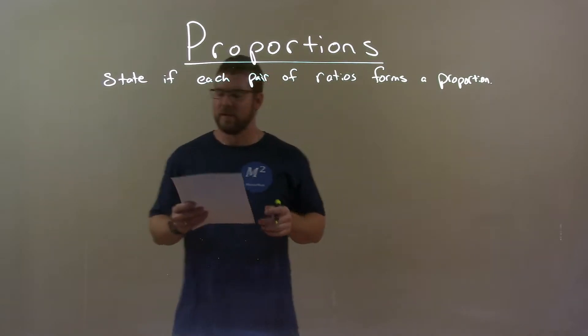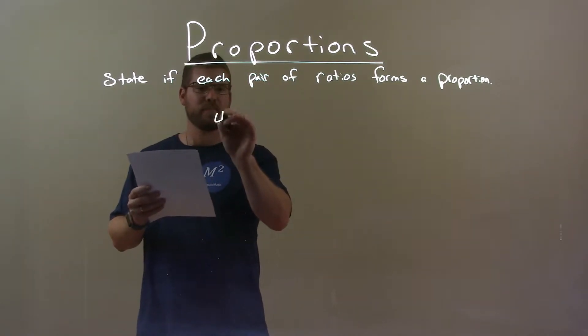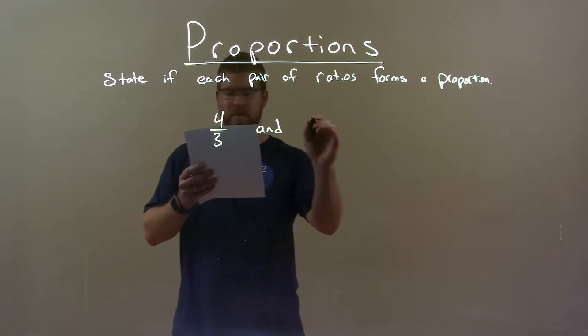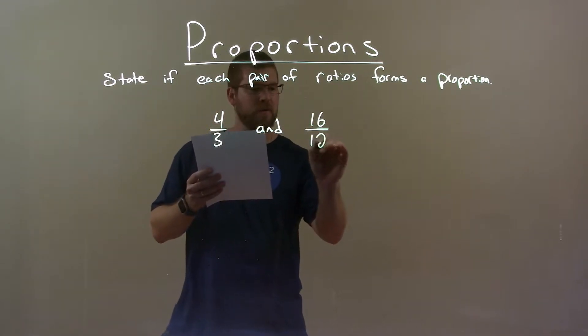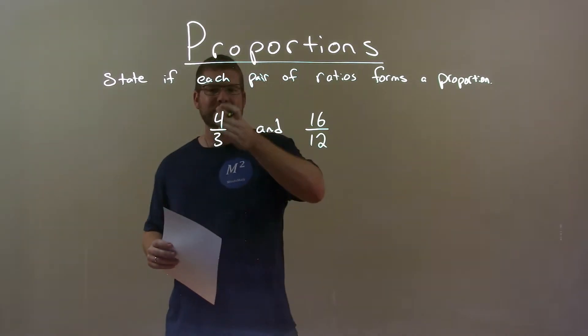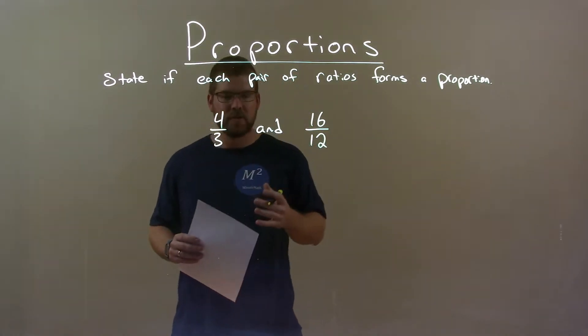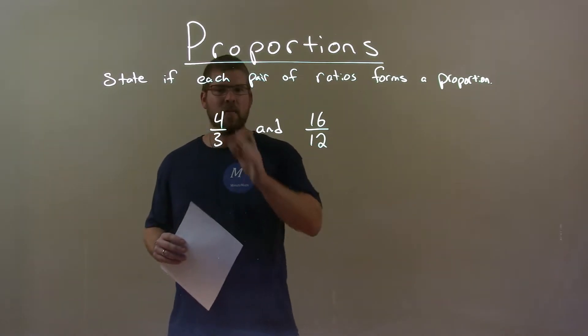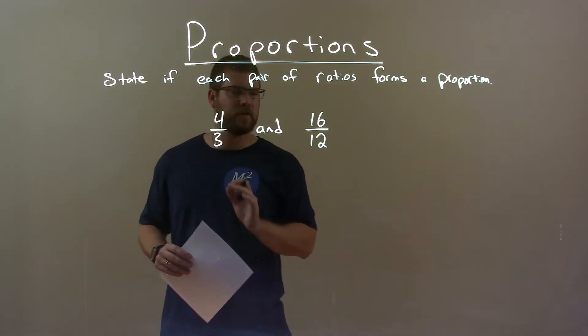So, if I was given these ratios, 4 thirds and 16 over 12, the way I like to solve this is I simplify each one of these ratios. 4 thirds doesn't simplify anymore. Don't worry about that. It's already in simplest form.